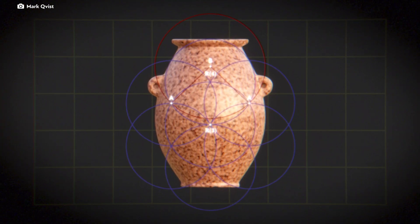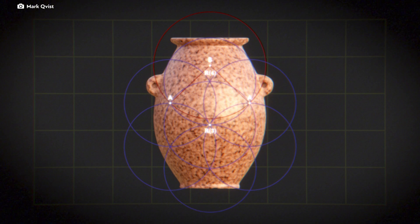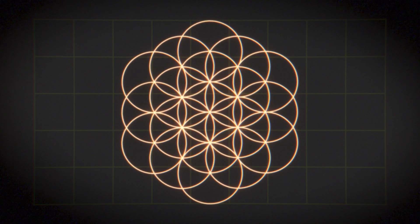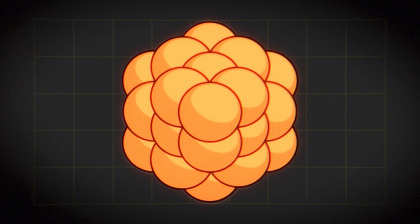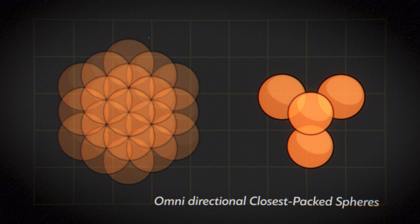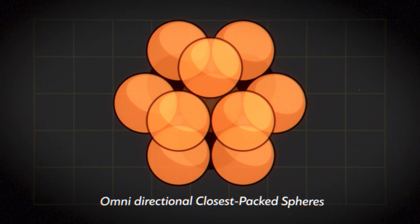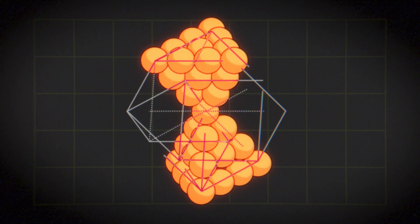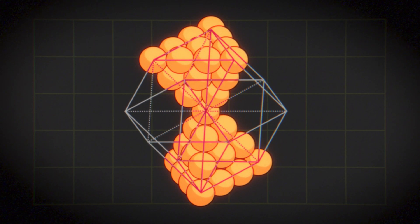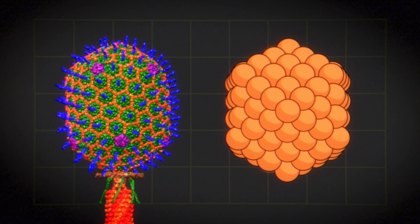There are several candidates for what it might represent. Envisioning this pattern not as a flat image but as a three-dimensional structure, it resembles the close packing of equal spheres, a process linked to fundamental questions about space organization and energy distribution, including in living systems.